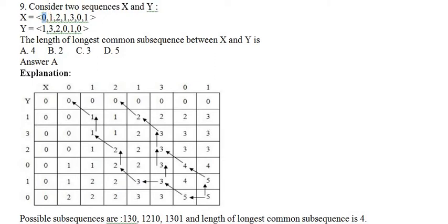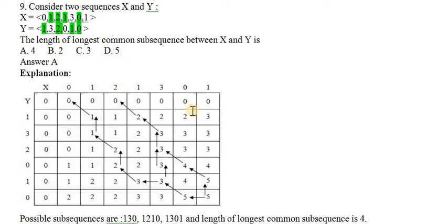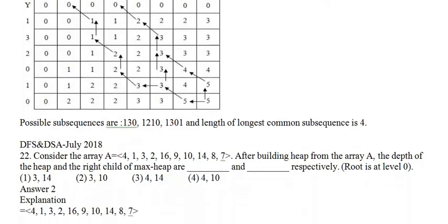We want to check whether a longer sequence is possible. If we skip the 0, there is a 1 — we can take this 1 here, and from Y we can take this 1 here. Then we can take 2 here, giving length 2 for elements 1 and 2. Further, we can take 1, skip 3, take 0, and take another 0. So 4 elements are common between X and Y — the longest common subsequence length is 4. Option A is correct.